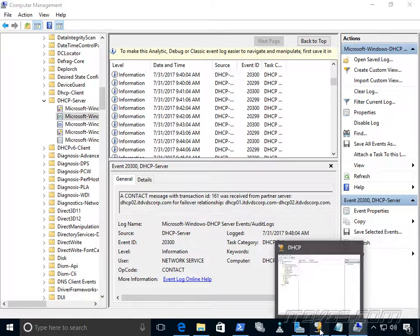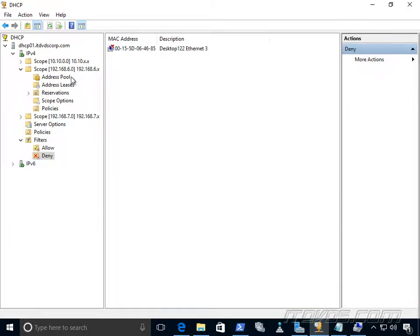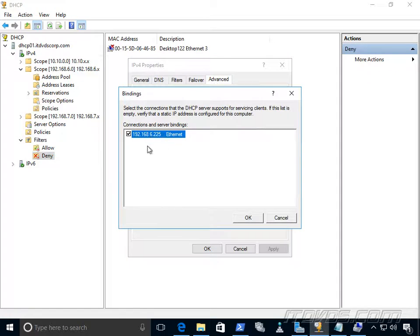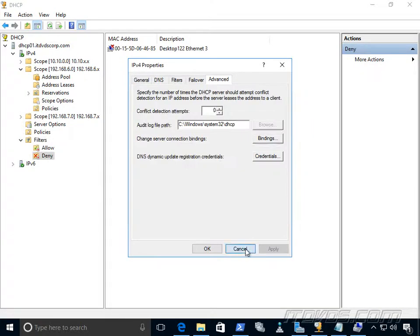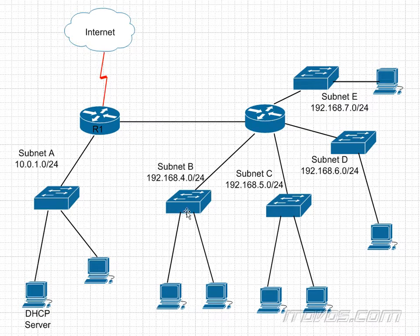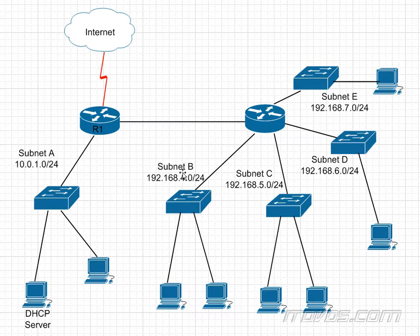If our DHCP server has multiple NICs connecting to multiple subnets, go to Properties > Advanced > Bindings and make sure those NICs are checked so they're usable for DHCP. If we have multiple subnets and a DHCP client is in Subnet B, make sure we have a DHCP relay agent set up so the DHCP broadcast actually reaches the DHCP server. We'd know it's a relay agent problem if all computers in a particular subnet can't get an IP address, while computers in the DHCP server's subnet can. It could also mean there's no scope set up for that subnet.